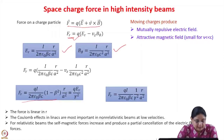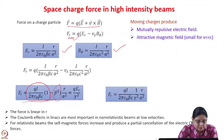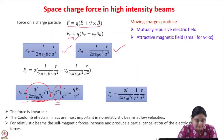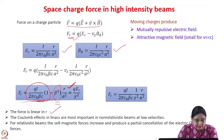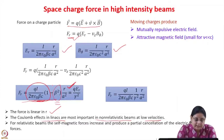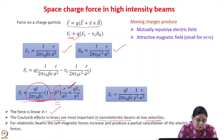There are two components to this force: one due to the electric field, which is repulsive, and the other due to the magnetic field, which is attractive (indicated by the minus sign). The force is also linear in R. The Coulomb effects in linacs are most important in non-relativistic beams at low velocities. As the beam becomes relativistic and beta approaches 1, the magnetic force will cancel the Coulombic repulsion due to the electric field. So Coulomb effects are more important at lower energies for high current beams.